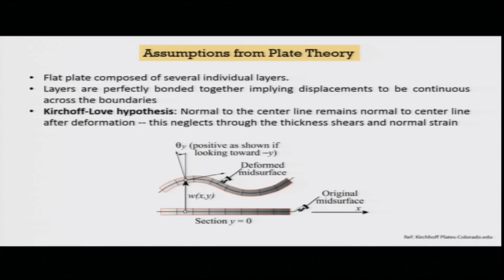The first assumption is that a flat plate in laminated plate theory is composed of several individual layers. These individual layers are called laminae. When you have several individual layers joined together, they form a laminate. So from lamina to laminate, we build up the flat plate — that is the first assumption.